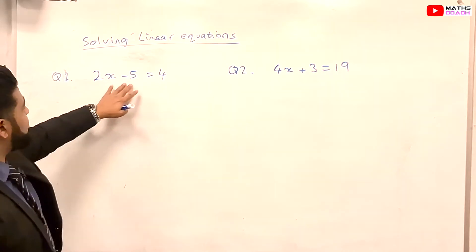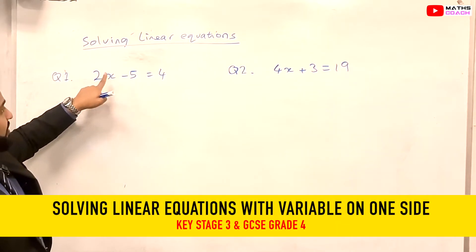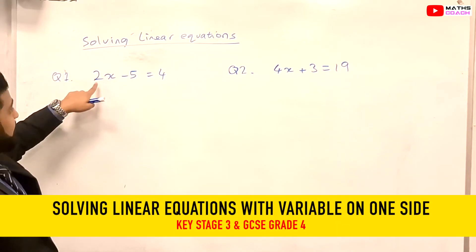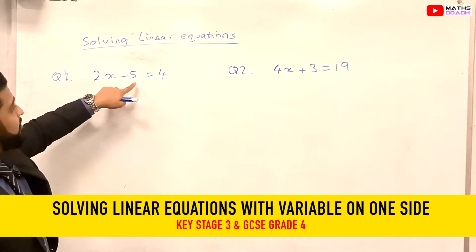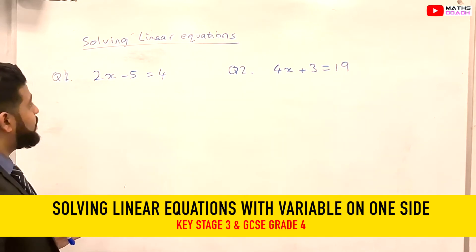So we have 2x minus 5 is equal to 4. We want to find the value of x, which is multiplied by 2 and then minus 5, that gives you 4.